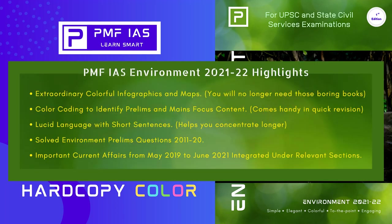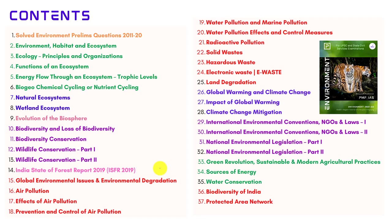I'll be walking you through the contents of the book, the salient features of the book, and why you must purchase this book over other books existing in the market. The entire book is organized into 37 chapters. The first chapter is about solved environment prelims questions asked between 2011 and 2020. This chapter will help you understand the nature of questions UPSC is asking and the current trend UPSC is following.